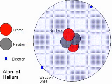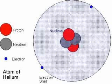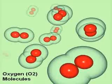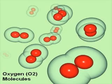Molecules can vary greatly in size and complexity. The element helium is a one-atom molecule. Some molecules consist of two atoms of the same element. For example, O2 is the oxygen molecule most commonly found in the Earth's atmosphere, and it has two atoms of oxygen.